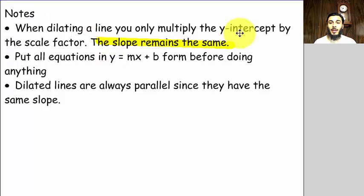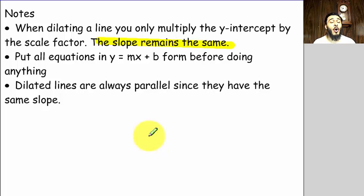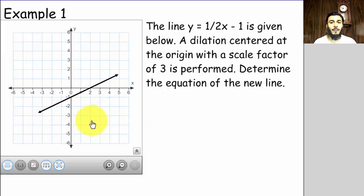So slope stays the same and you only multiply the y-intercept. Number two: make sure that before you do anything, you are in y = mx + b form. And number three: make sure you understand that dilated lines are always parallel, by virtue of the fact that they have the same slope.